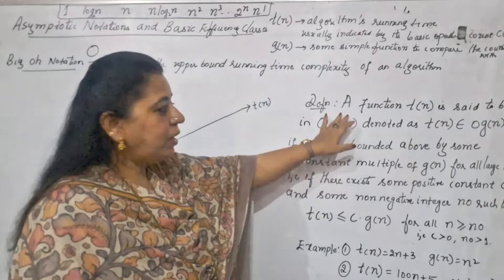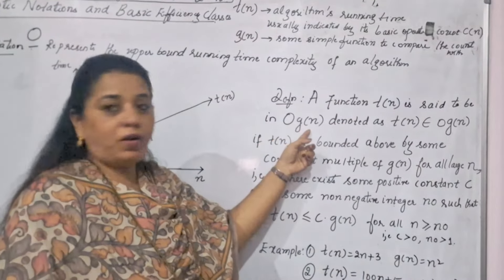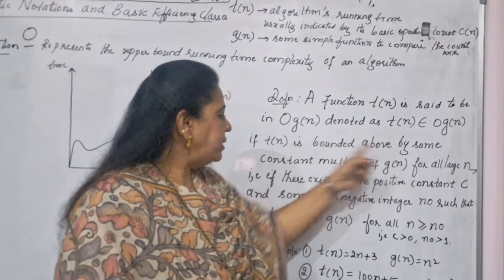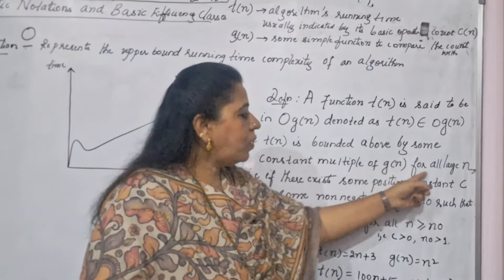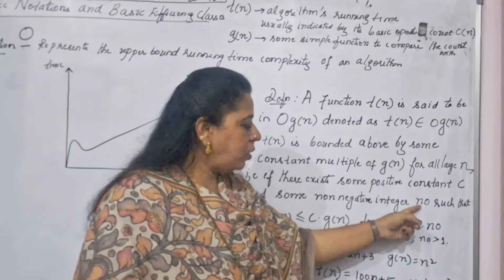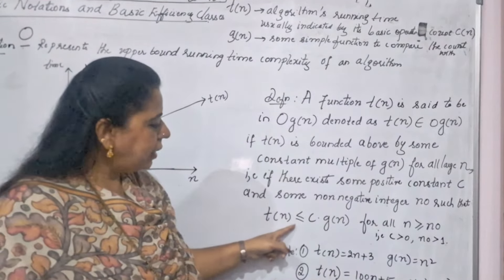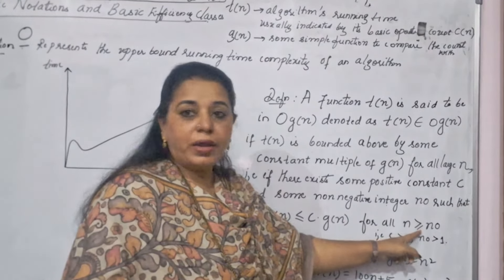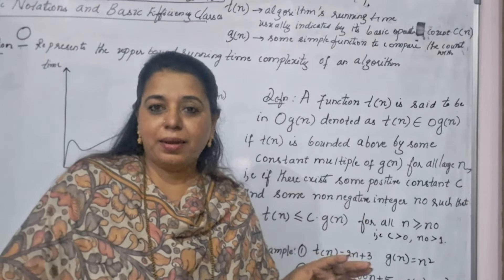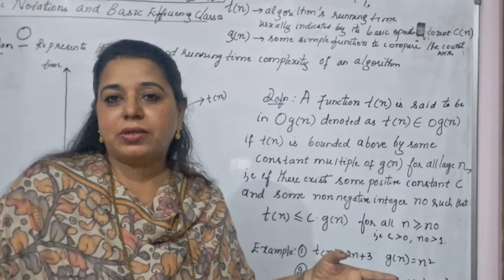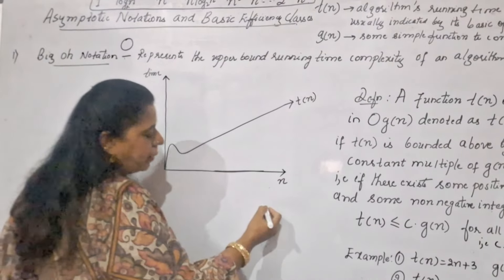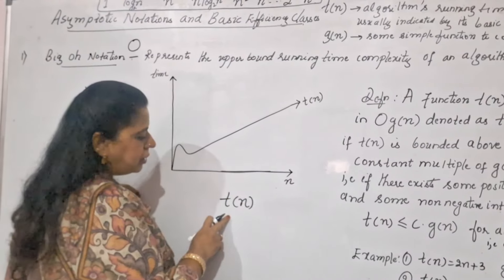Look at the definition for Big O notation. A function t(n) is said to be in O(g(n)), denoted as t(n) belongs to O(g(n)), if t(n) is bounded above by some constant multiple of g(n) for all large n — that is, if there exist some positive constant c and some non-negative integer n₀ such that t(n) ≤ c·g(n) for all n ≥ n₀. This definition you may not be able to understand right away, so I'll make things simpler as I explain further.